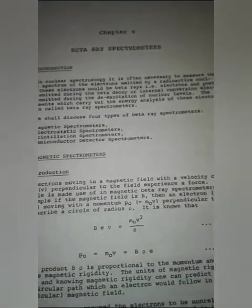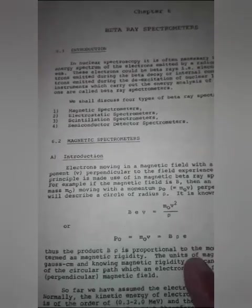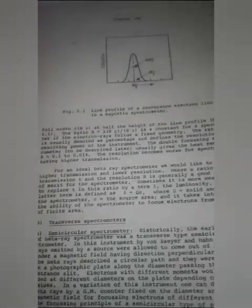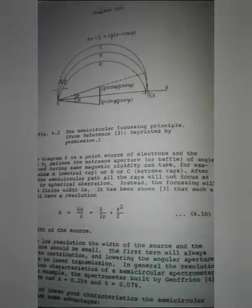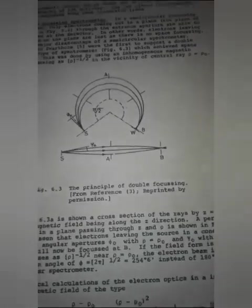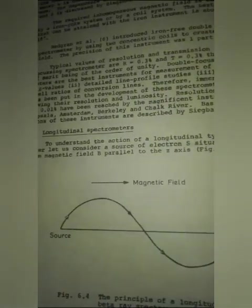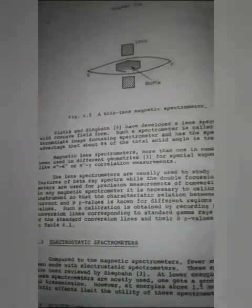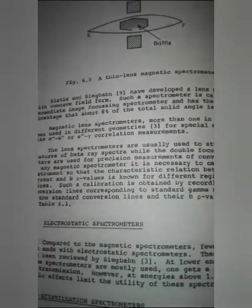The book shows the beta ray spectrometer section and magnetic spectrometers. Featured are the transverse spectrometer and semicircular spectrometer, the principle of double focusing, longitudinal spectrometers, an electrostatic spectrometer, a thin-lens magnetic spectrometer, and a semiconductor beta ray spectrometer. References and suggestions for further reading are also included.